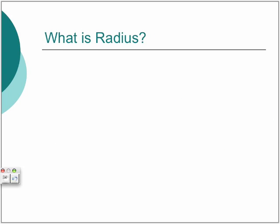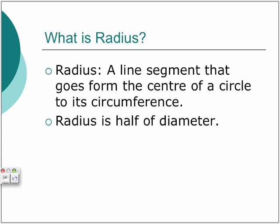I'll tell you what the radius is. The radius is a line segment that goes from the center of a circle to its circumference.